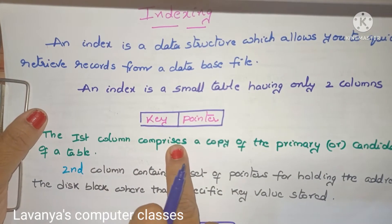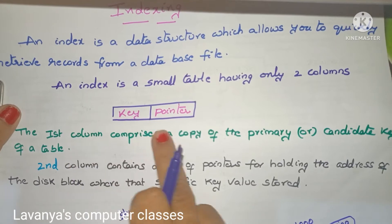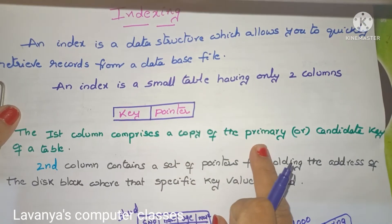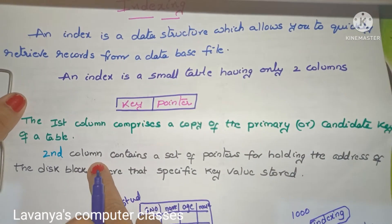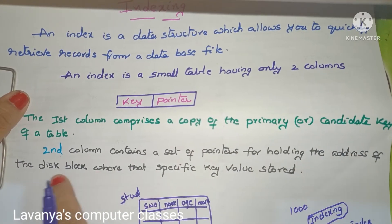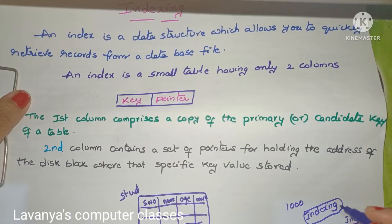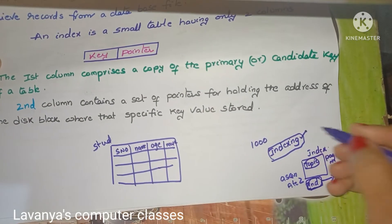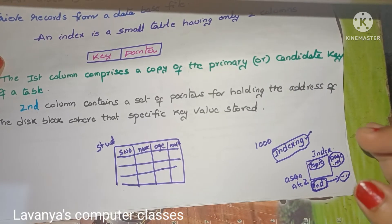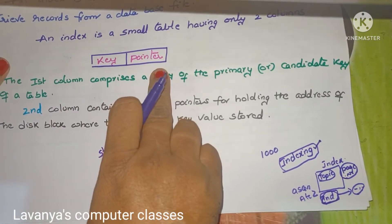The first column comprises a copy of the primary or candidate key of a table, because we search through a unique key only — that's why the key should be unique, either a primary key or a candidate key. The second column contains a set of pointers holding the address of the disk block where the specific key value is stored. In the textbook example, the particular topic is available at certain disk block locations.